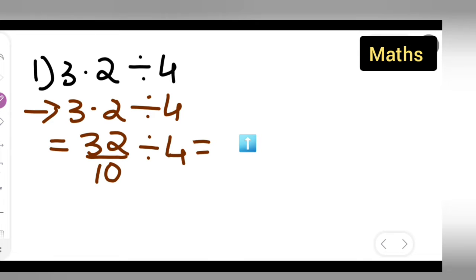This is equal to 32 upon 10 multiplied by the reciprocal of 1 upon 4. We have to divide this, right? So 32 upon 10 multiplied by 1 upon 4.